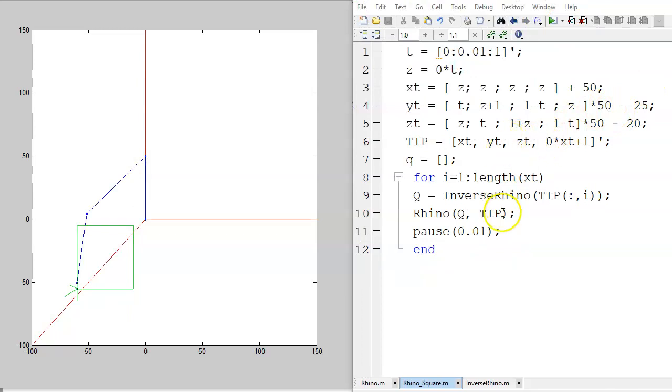Okay, the last example, now that I have the inverse rhino and rhino programs working, let's have it draw out a square. What I'll do is I'll specify the tip position. This is x in the x-axis, then y, x, and z, going around a square.